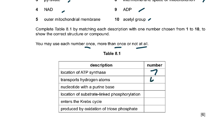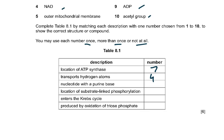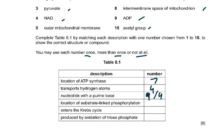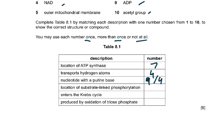Transports hydrogen atoms — you could have written 4, which is NAD, because NAD carries the hydrogen atoms. Nucleotide with a purine base — you could have said 9 or 4, meaning NAD or ADP.